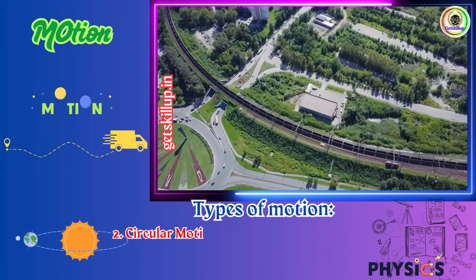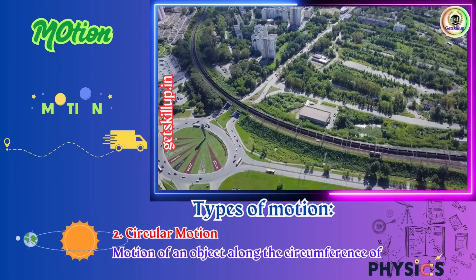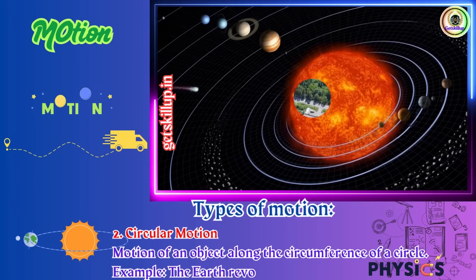Second, circular motion, motion of an object along the circumference of a circle. Example, the earth revolving around the sun.